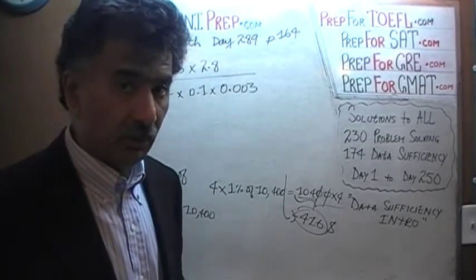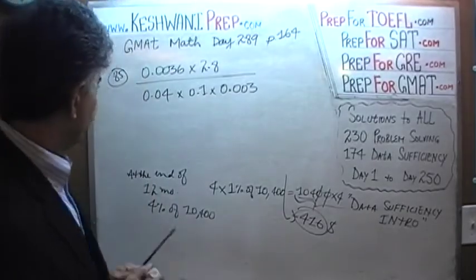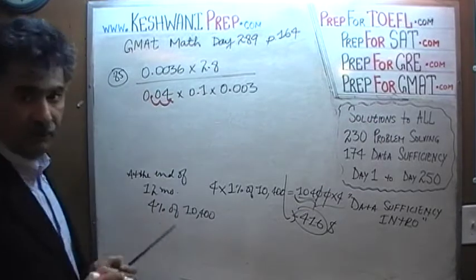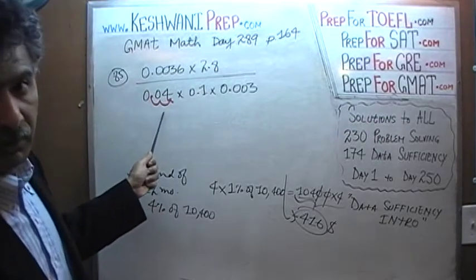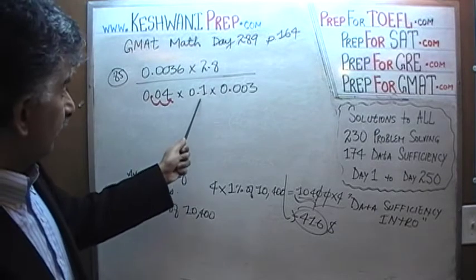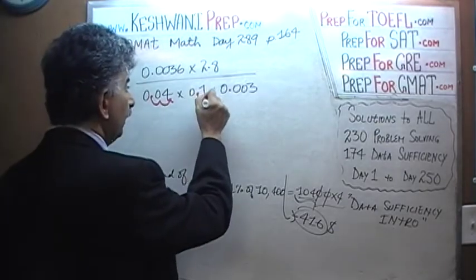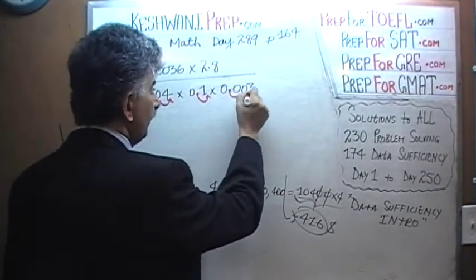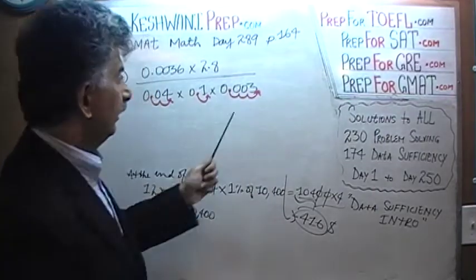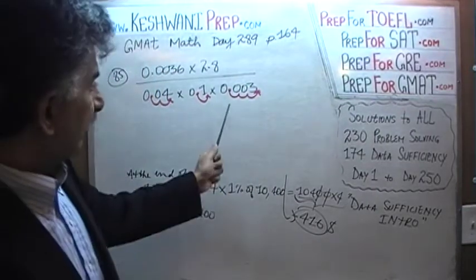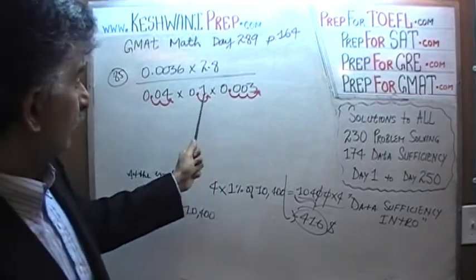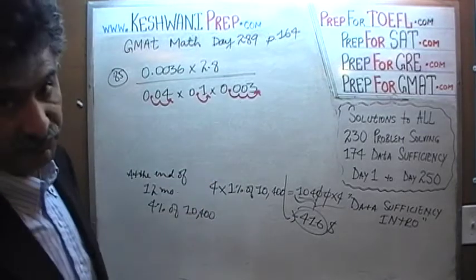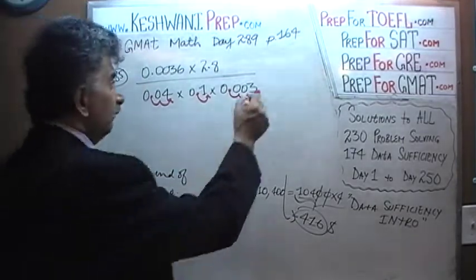How do we convert them? We see 0.04 — multiply by 100 and it becomes 4. Multiply 0.1 by 10 and it becomes 1. Multiply 0.003 by 1000 and it becomes 3. So on the bottom we need 100 times 10 times 1000, which is 10 to the 6. Since we multiply the bottom by 10 raised to 6, we must also multiply the top by 10 raised to 6 to keep it balanced.